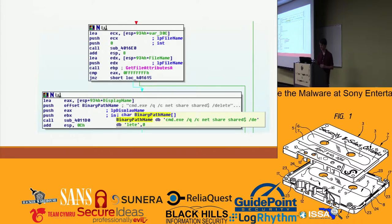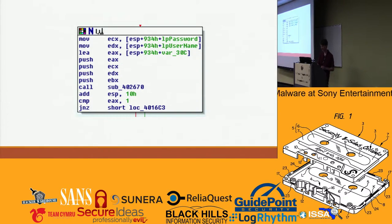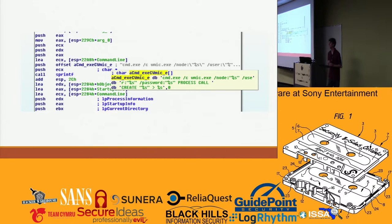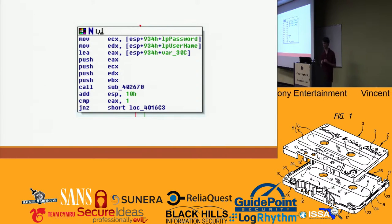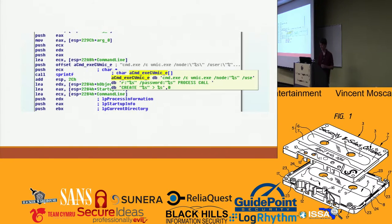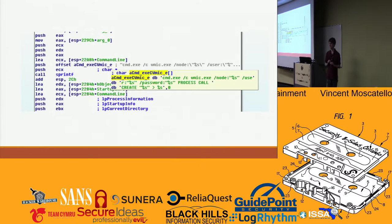It creates shares, but the most significant part is actually copying the binary onto the new machine. Before calling the propagation function sub_402670, it gets the username and password, and then passes that to WMIC.